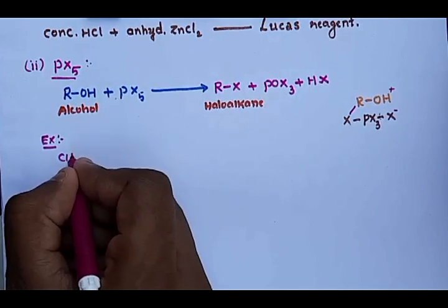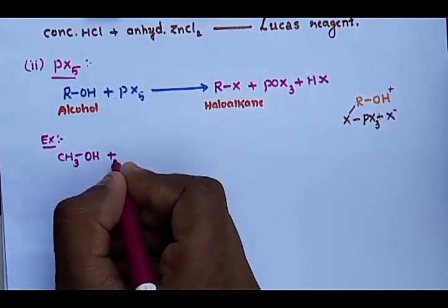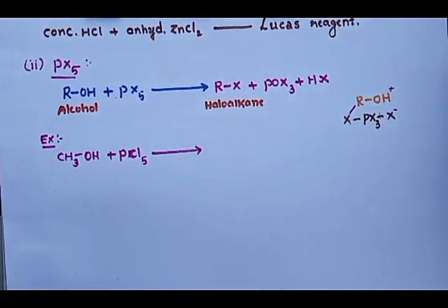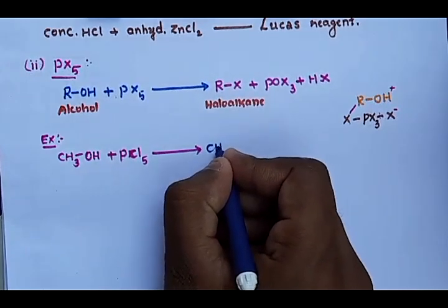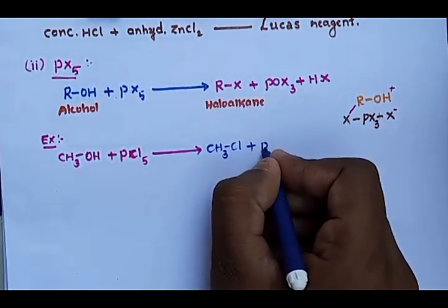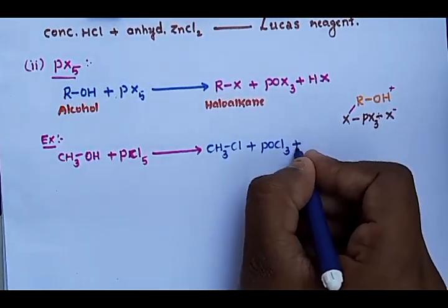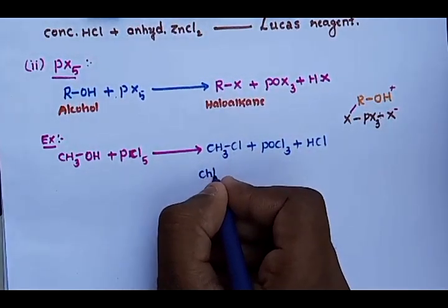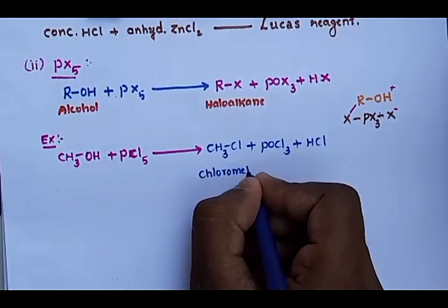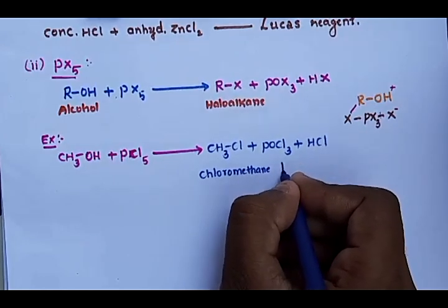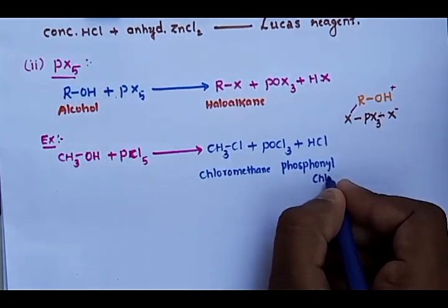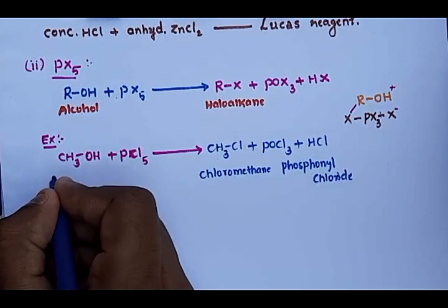For example, CH₃OH plus PCl₅ gives CH₃Cl plus POCl₃ plus HCl. The product CH₃Cl is named chloromethane (IUPAC name). POCl₃ is named phosphonyl chloride, and the starting material CH₃OH is methanol.